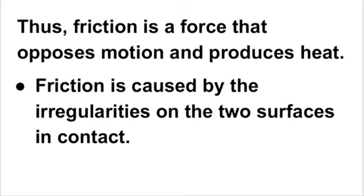How is friction introduced? What is the cause of friction? Friction is caused by the irregularities on the two surfaces in contact. No surface is completely smooth — even a surface that appears very smooth has some minute irregularities.